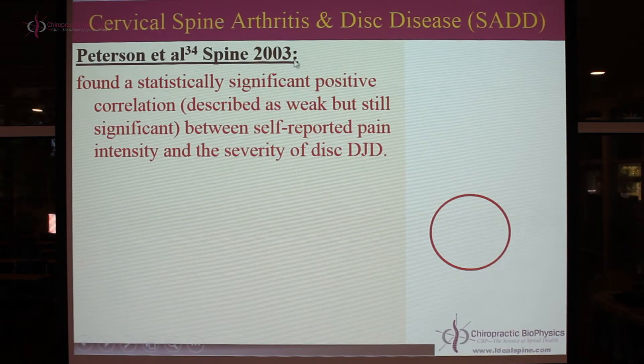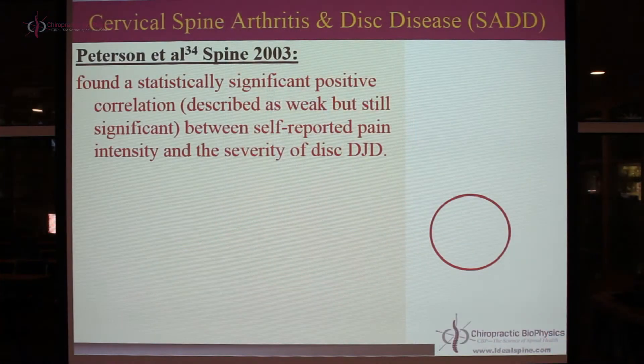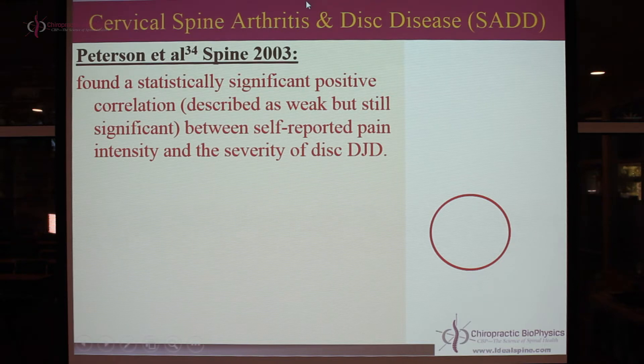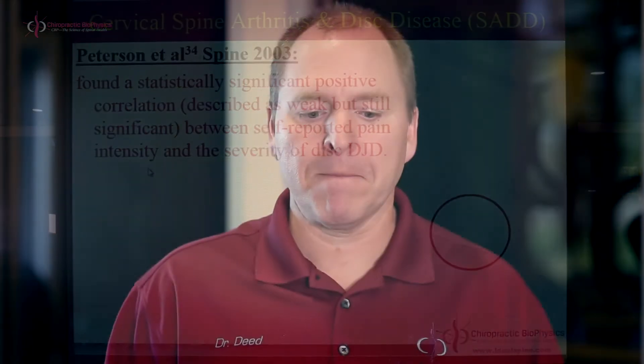Let's look at a study by Cynthia Peterson, a chiropractor, published in Spine 2003. They looked at a population, examined lateral and AP cervical radiographs, and looked at statistical relationships between findings and pain. What they found was a statistically significant positive correlation — described as weak — between self-reported pain intensity and the severity of DJD. It's still statistically significant: the more extensive the degenerative joint disease, the more severe the self-reported pain.